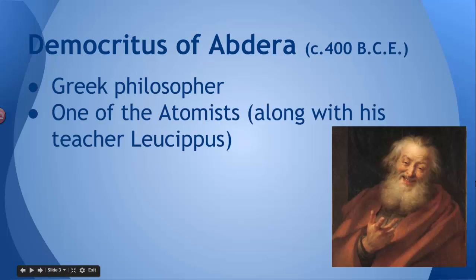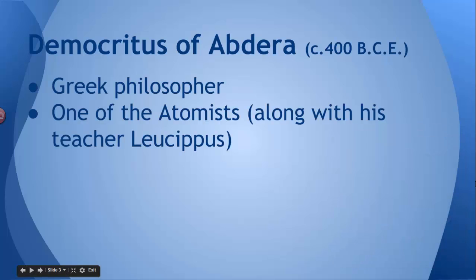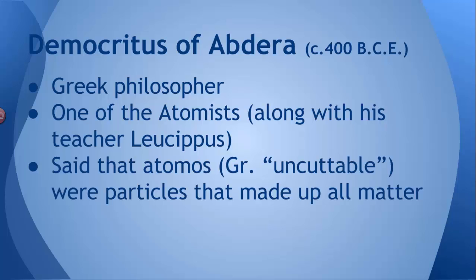Democritus was a philosopher, and he was one of the atomists. He and his teacher, Leucippus, were the principals in this philosophical group called the atomists. And they believed that atomos, which is Greek for uncuttable, atomos was the term that they used for particles that made up all matter. Uncuttable is what atomos means.